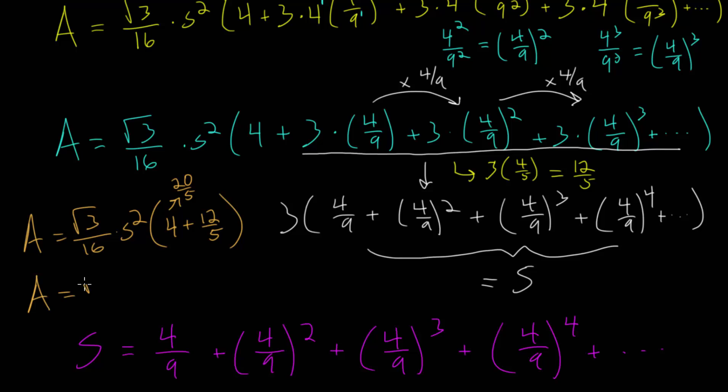That a is root 3 over 16 times s squared times by 32 over 5. And at this point, we just need to simplify. We now can notice that we have 32 over 16. That is just 2 when we simplify. And nothing else simplifies, meaning that we have twice the square root of 3 divided by 5.